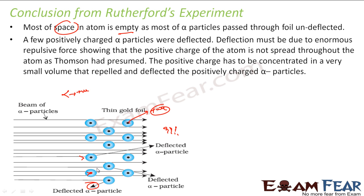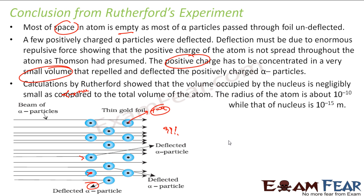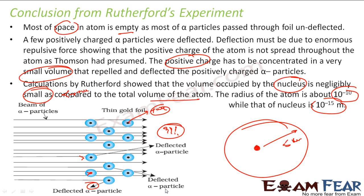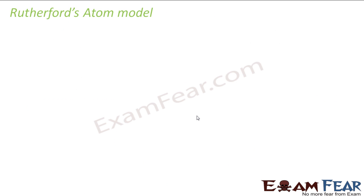He concluded that the positive charge is concentrated in a very small volume that repelled and deflected alpha particles. He did calculations and found that the nucleus occupies a very small volume compared to the whole volume of the atom. If the radius of atom is 10⁻⁹ meters, the radius of nucleus is 10⁻¹⁵ meters. If we have a cricket ball as a nucleus, then the atom would be 5 kilometers in diameter.